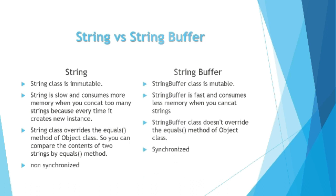With this difference we can conclude another difference: String is slow and consumes more memory, because every time we perform a concatenation operation, a new instance is created, which will definitely affect memory. But in the case of StringBuffer, it doesn't create a new object — it is fast and consumes less memory.